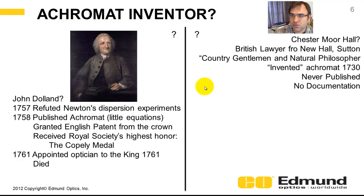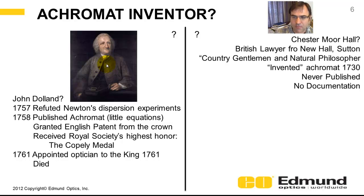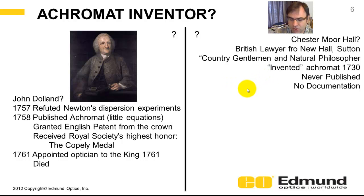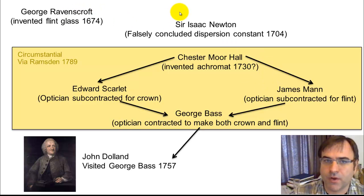I just briefly want to touch on the history. Who invented the achromat? There are two versions of history and it appears we really don't know who made it. On the left side we have John Dolan. On paper, he got the patent and is credited with the invention. In 1757 he refuted Newton's dispersion experiments, and in 1758 he published about the achromat with very little equations. He got a patent that year and received the Copley Medal from the Royal Society. He died soon thereafter and was appointed optician to the king. Here's just a quick summary of the invention of the achromat. Time is on the vertical axis, with early time at top and late time at the bottom. George Ravenscroft invented flint glass by doping it — going away from flint rock and putting lead glass into it. Sir Isaac Newton incorrectly concluded that all dispersion in glass was constant in 1704, largely because his instrumentation wasn't good enough.